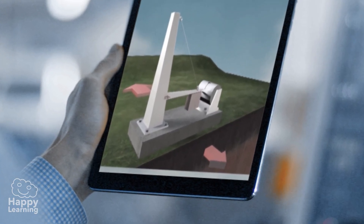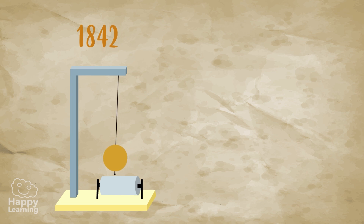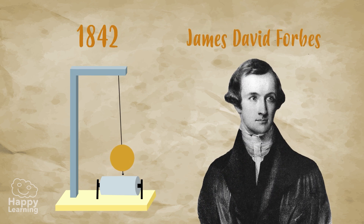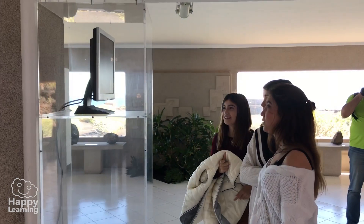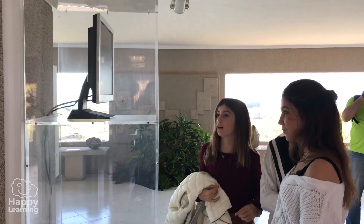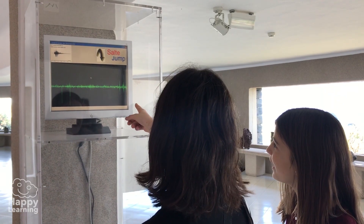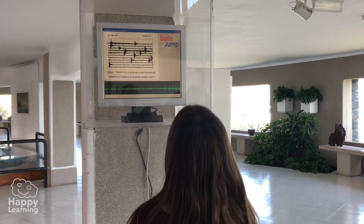The seismograph, or seismometer, is the instrument used to measure the earthquake's intensity. Invented in 1842 by the Scottish scientist James David Forbes, it measures the seismic waves that earthquakes cause. Over time these instruments have been perfected to the point that some can measure earth tremors as small as one that Daniela can cause by jumping — funny, right?